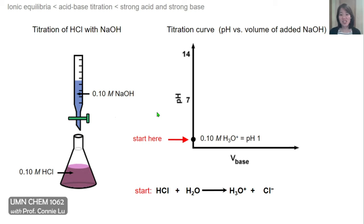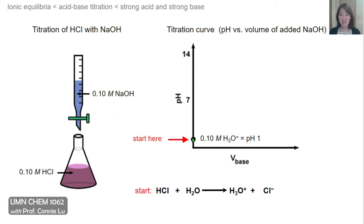Initially, at the very start of this experiment, we haven't added any base yet, so we're starting with just 0.1 molar HCl. A strong acid dissociates fully to form hydronium ions, so at the starting point we have 0.1 molar hydronium. Taking the minus log of this value, the solution begins at pH 1.